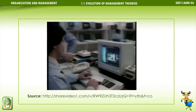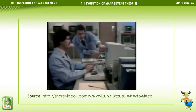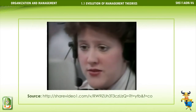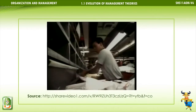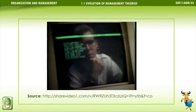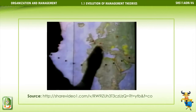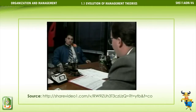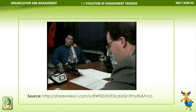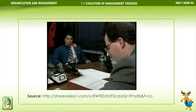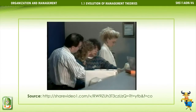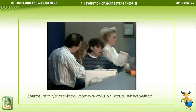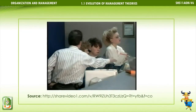According to Taylor, the role of management is to: one, develop the one best way to perform any task; two, scientifically select, train, teach, and develop each worker; three, cooperate with workers and provide an incentive to ensure that the work is done according to the one best way; and four, divide the work and the responsibility equally between management and labor.